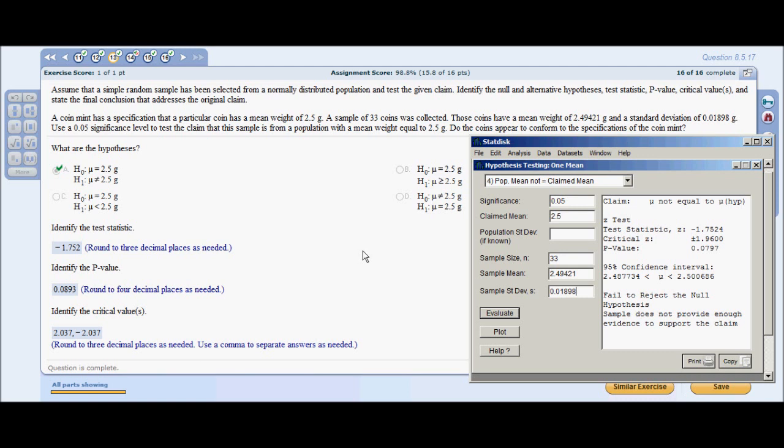For StatDisk, you're going to go to hypothesis testing, one mean, and use number four, population mean does not equal claim mean. Here, you are going to use the same process. Identify your input: significance 0.05, claim mean is 2.5, sample size 33, sample mean 2.49421, sample standard deviation is 0.01898. In this problem, in particular, you're going to put your standard deviation into the sample size because you're using a sample of coins. And be sure to use all these numbers in their entirety. Do not prematurely round them off.